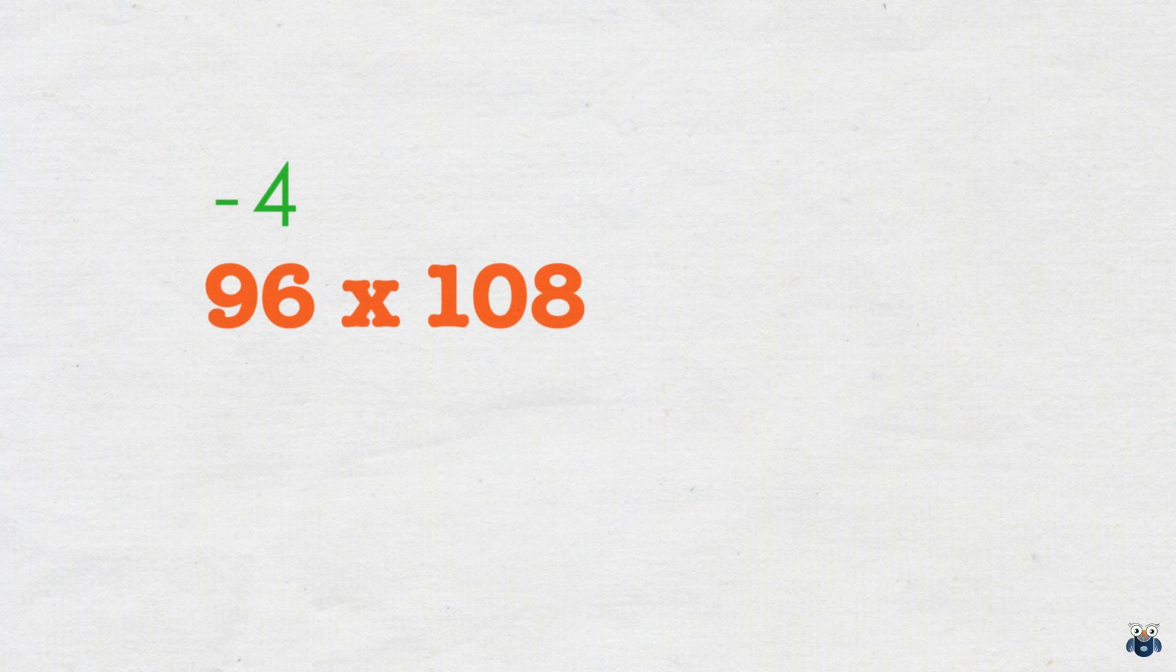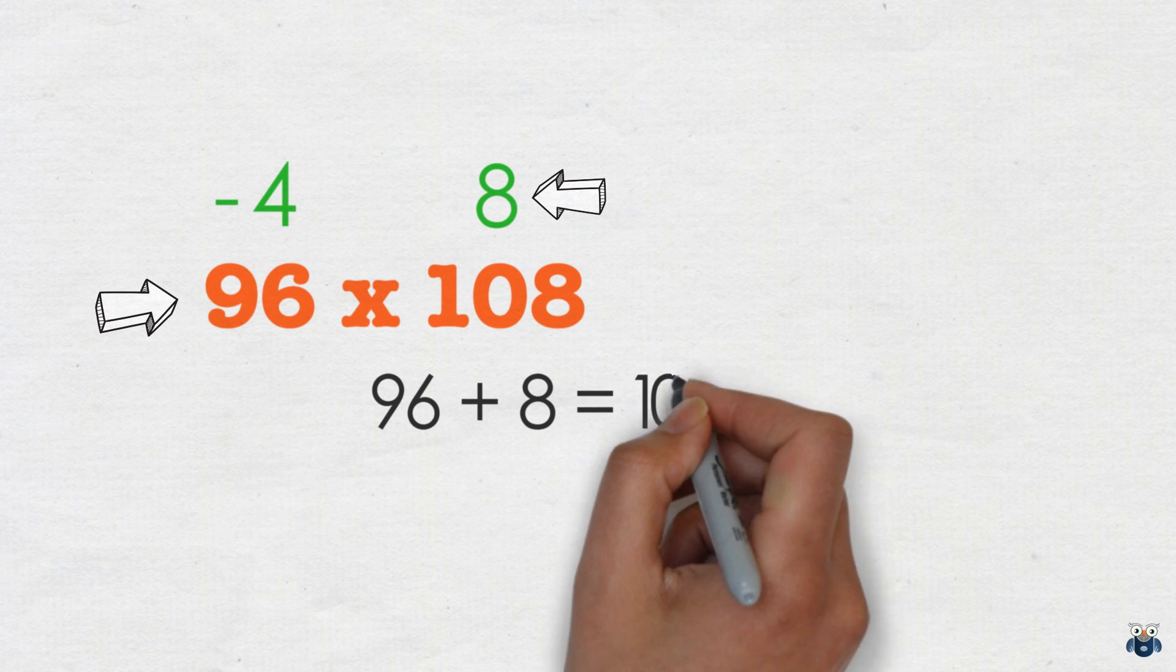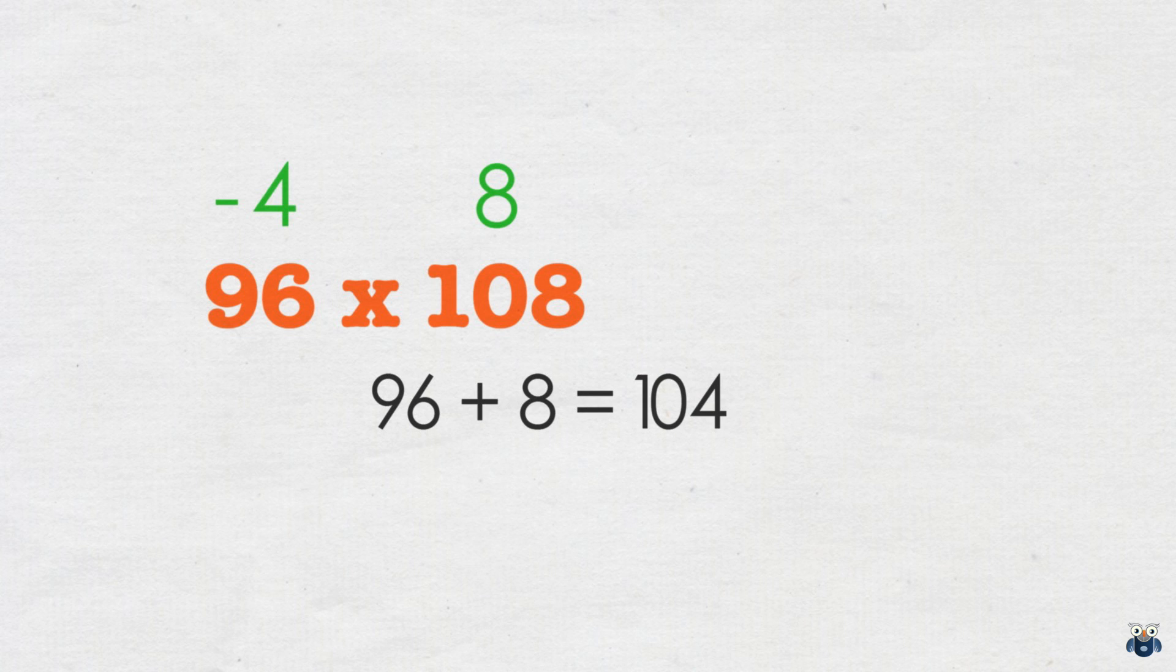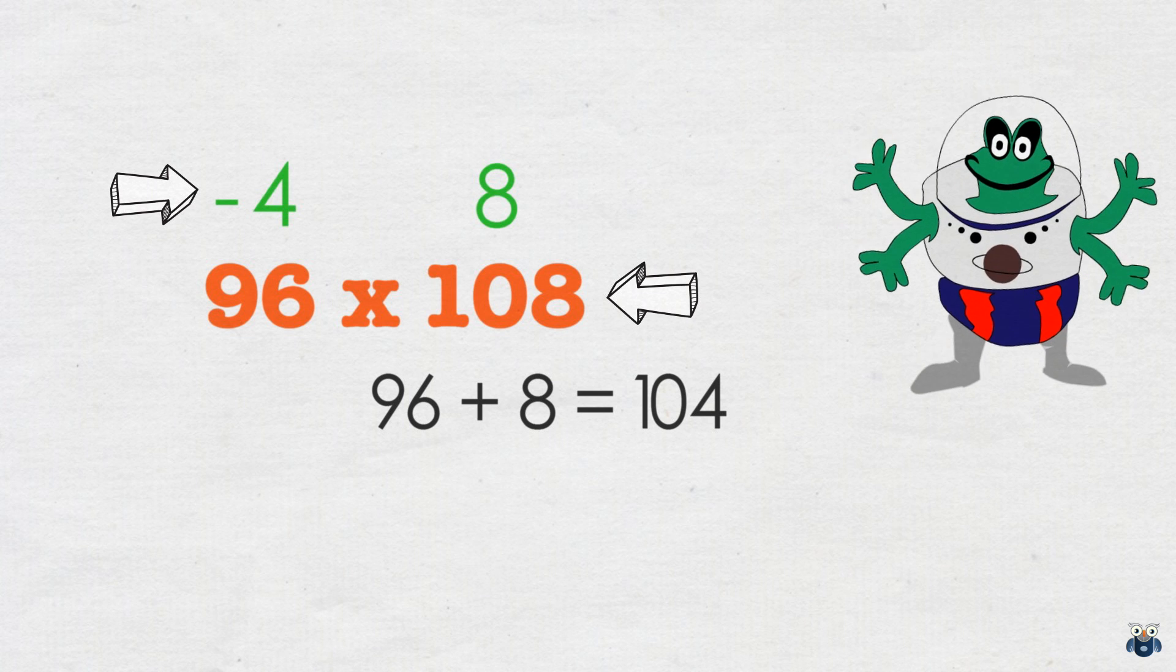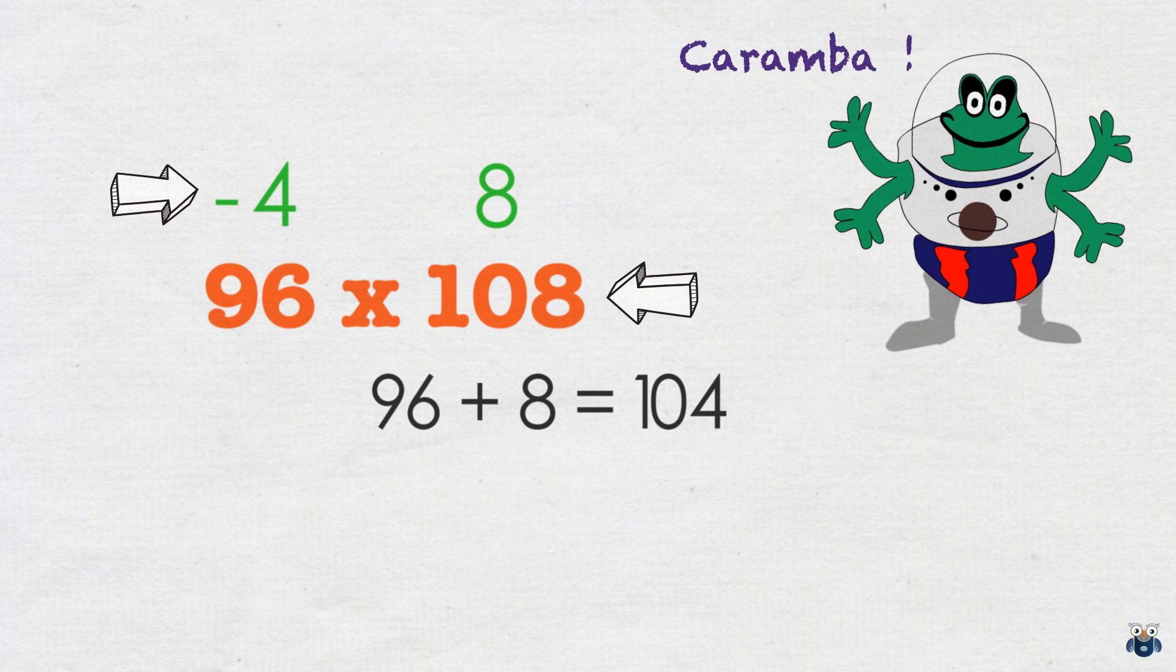So 96 is 4 less than 100 and 108 is 8 more than 100. We write this down. We then add the first number and second deficit. This gives us 104. We could have added the second number and first deficit instead and still got the same result. Please make a note of this.